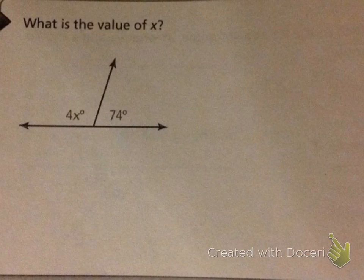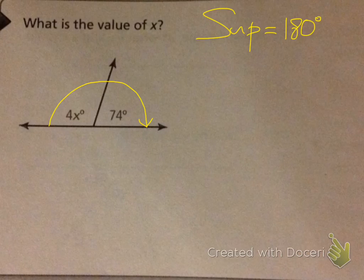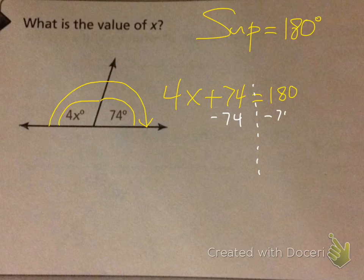Alright, next problem. Together these two angles make up supplementary. So supplementary means sup means 180. It's what you say to your friends. So sup. 4x plus 74, together these two angles make 180. So again, the idea of balance comes into play. We subtract 74 on both sides maintaining balance. At least 4x here and 106 here.